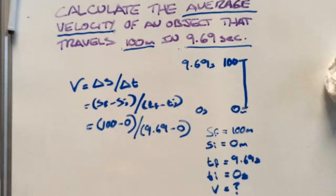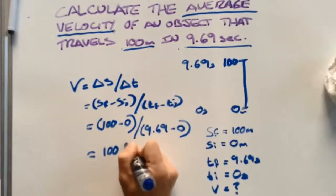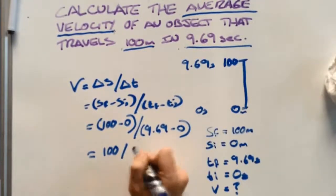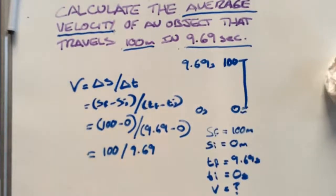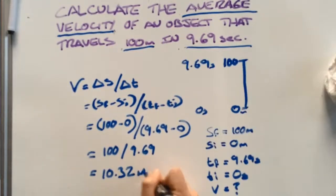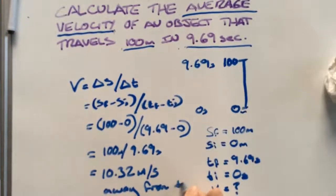So we then have 100 divided by 9.69, which gives us 10.32 meters per second. We get meters per second because we have meters from our displacement and seconds from our time. And this is traveling away from the origin, so we can keep the positive next to the solution.